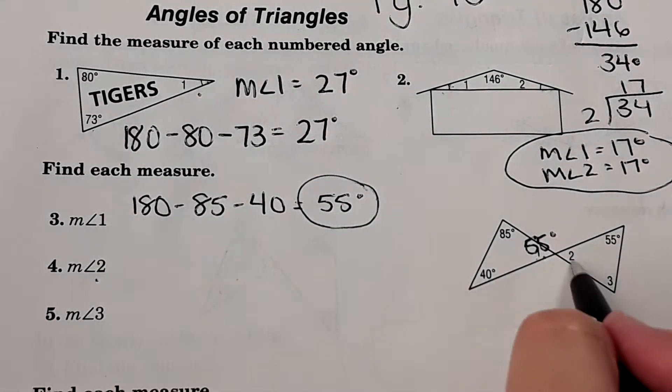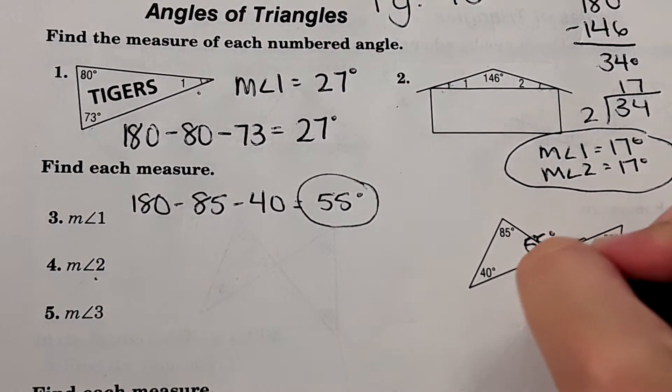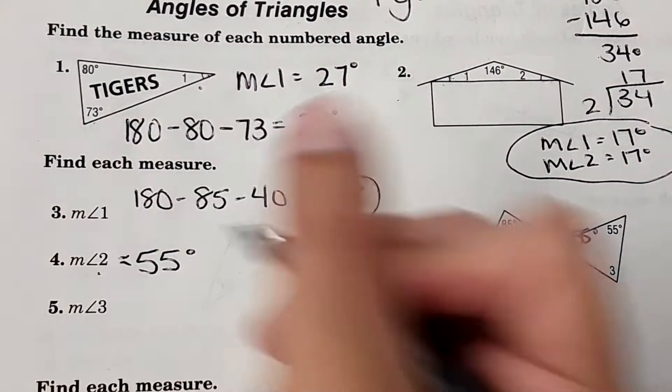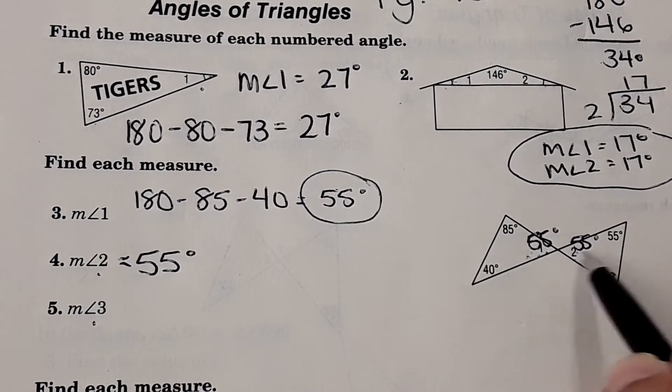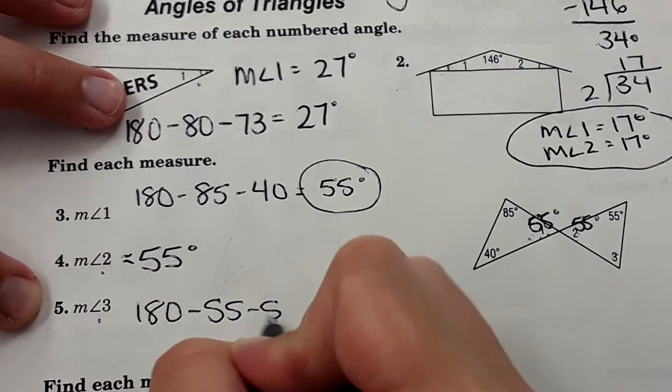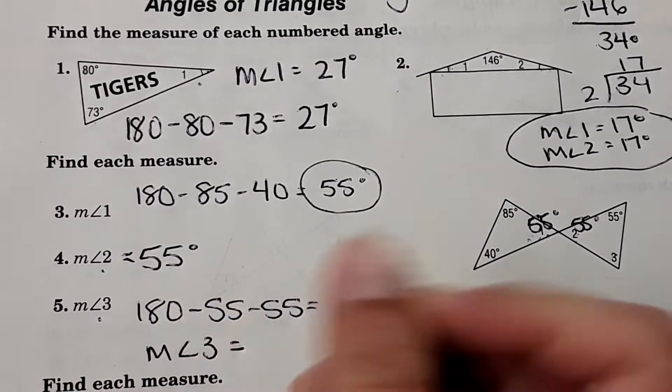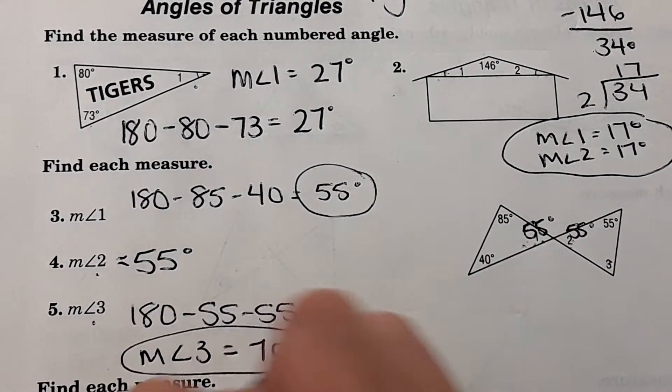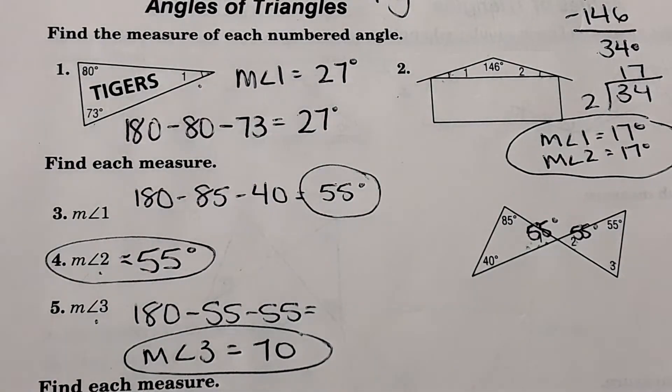Then measure of angle two is a vertical angle with measure with one, so this must also be 55 degrees. And then measure of angle three, these three angles have to add to 180, so we can do 180 minus 55 minus 55 to get measure of angle three equals 70 degrees. Nice job, you're right.